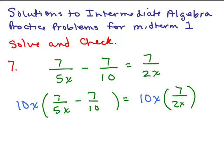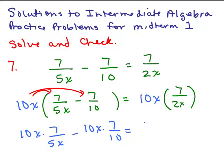I need to do the distributive property here on the left so that I have 10x times 7 over 5x minus 10x times 7 over 10. On the right-hand side, I don't have the distributive property, so I can just cancel. The x's cancel, and then 2 goes into 10 five times, so I have 5 times 7. The right-hand side is just 5 times 7 or 35.